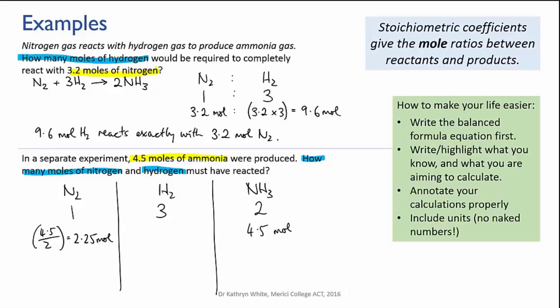Now for the hydrogen. The ratio here is slightly more complex, three hydrogen to two ammonia. But you can see that if the 4.5 moles of ammonia represents two parts, then we can divide by two to find out what one part is, and then multiply by three to find the three parts of hydrogen. And that tells us that 6.75 moles of hydrogen were needed.